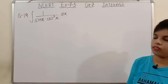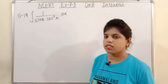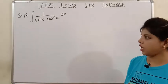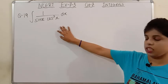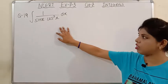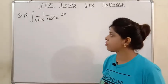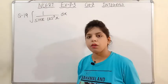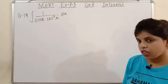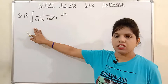Question number 19: integration of 1 upon sin x · cos²x dx. Here, notice carefully that both function and derivative are in the denominator. So we need to apply a different trick. In such questions we try to change everything to tan x form. tan x will appear when cos comes under sin in the denominator.